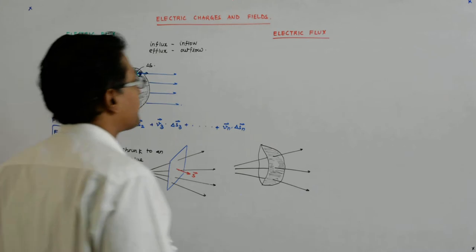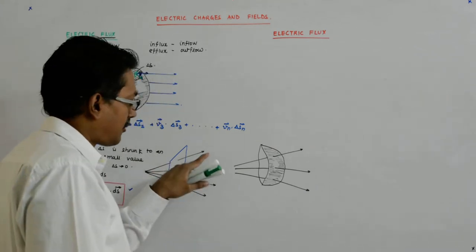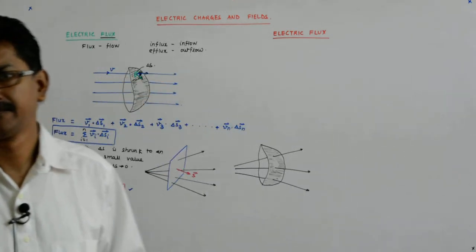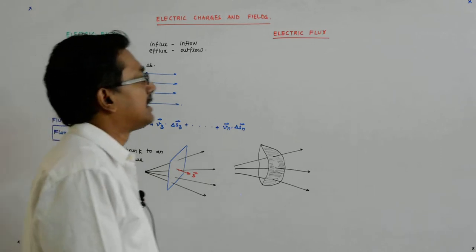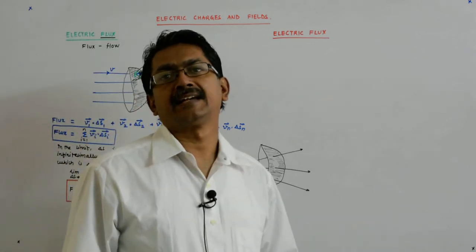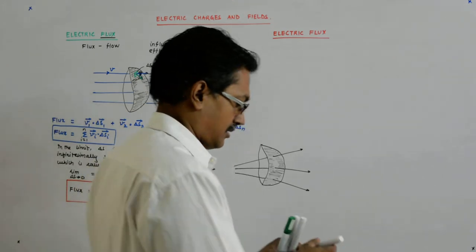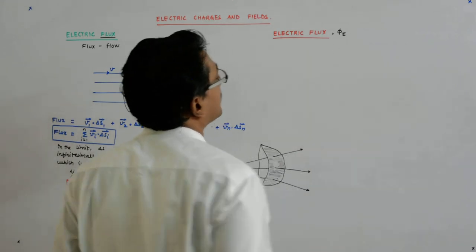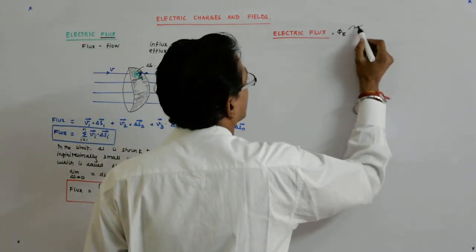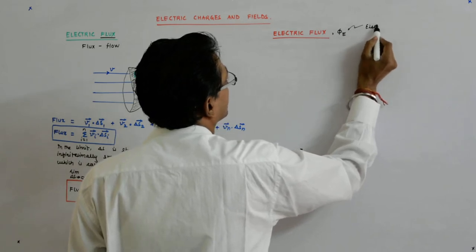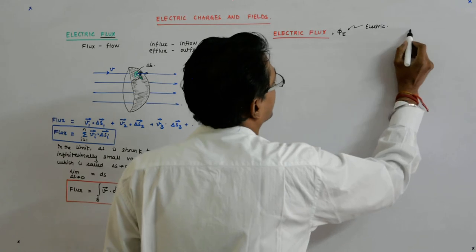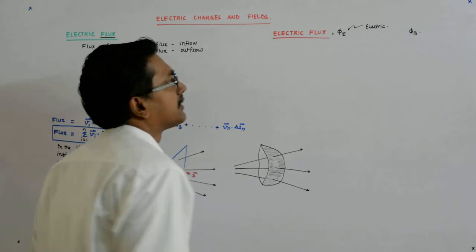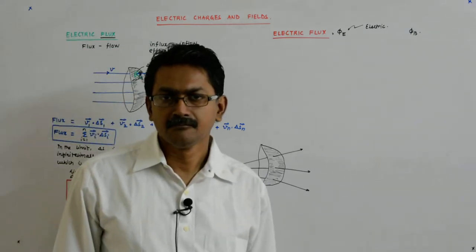We had come till this point. Now if instead of this velocity vector, it is the electric field lines which flow. If the flow is the electric field, it is called electric flux. It is denoted by Phi E. E stands for electric because we also have magnetic flux, which will be defined by Phi B.